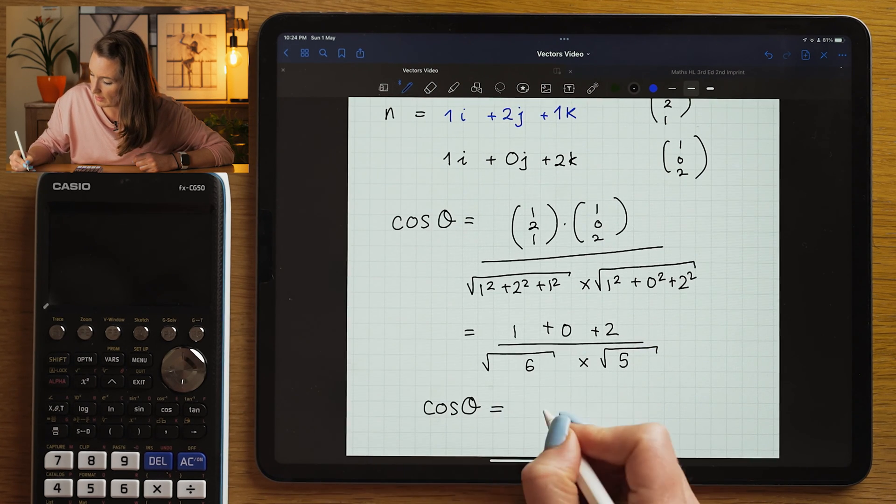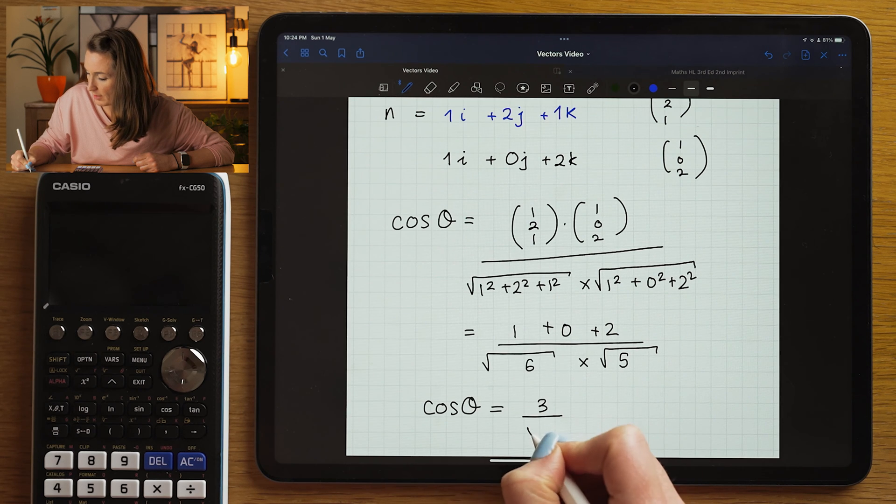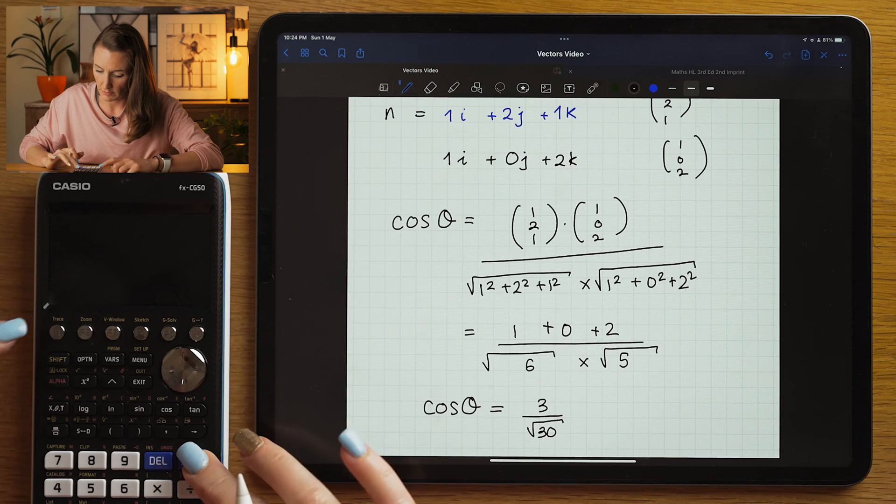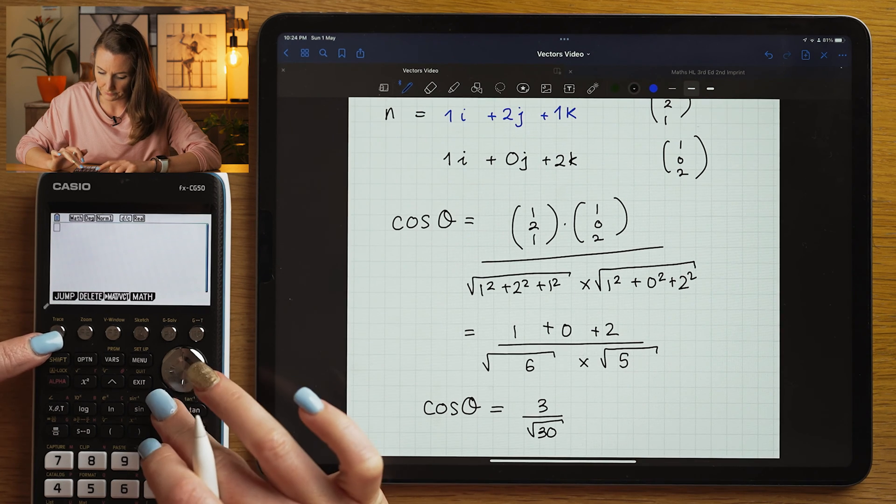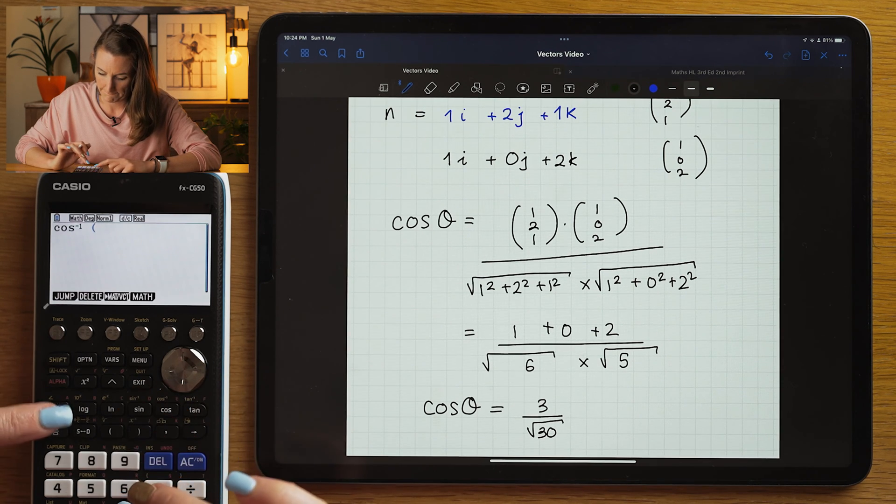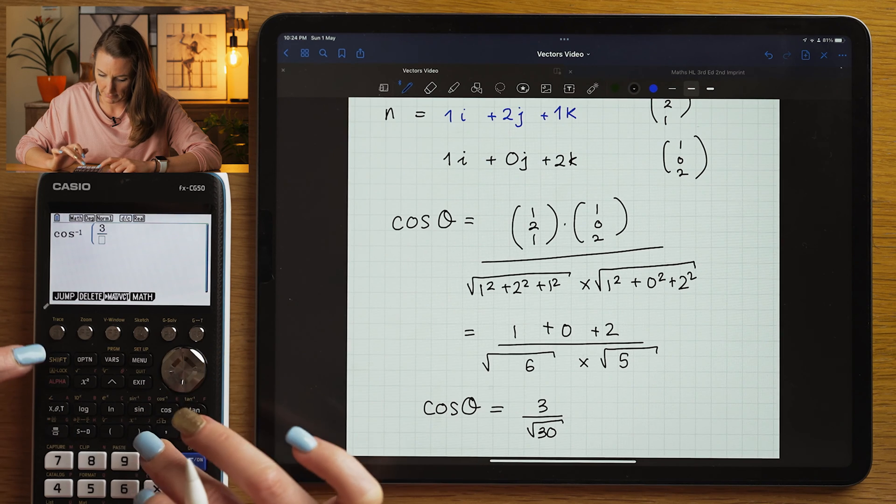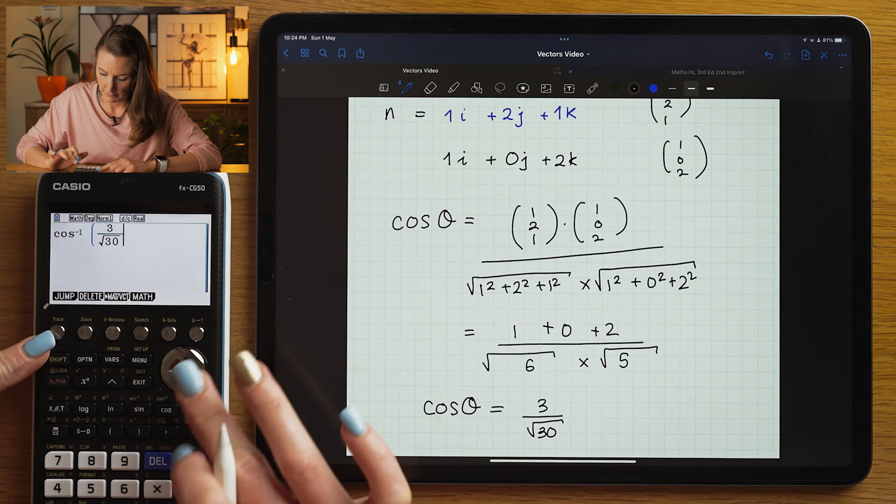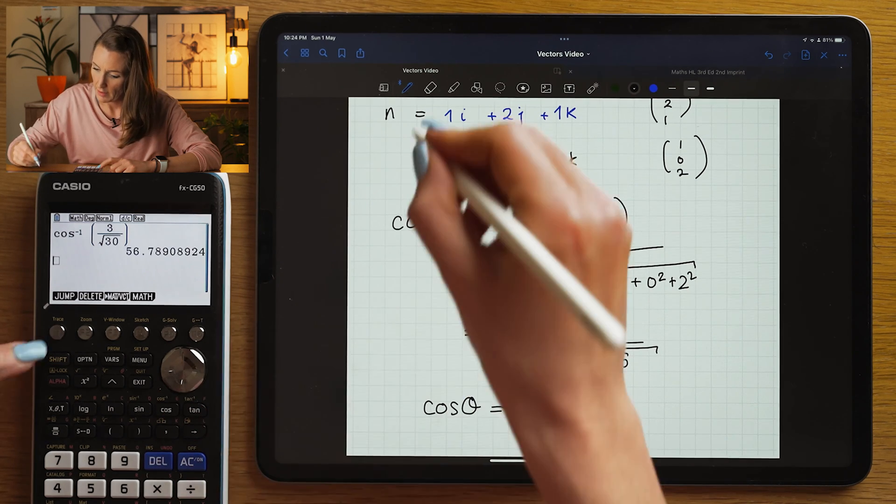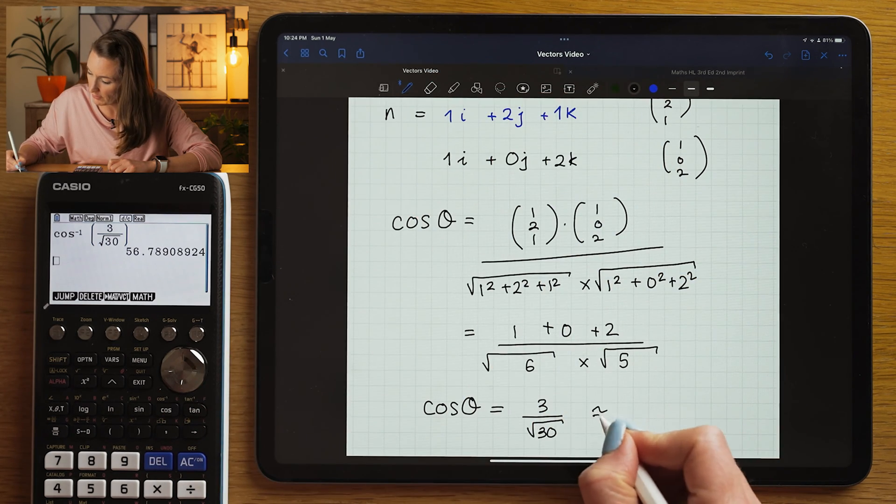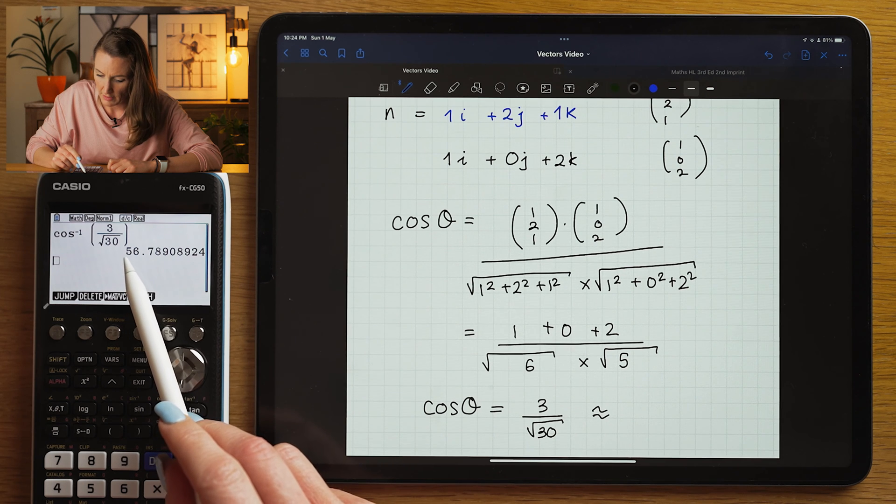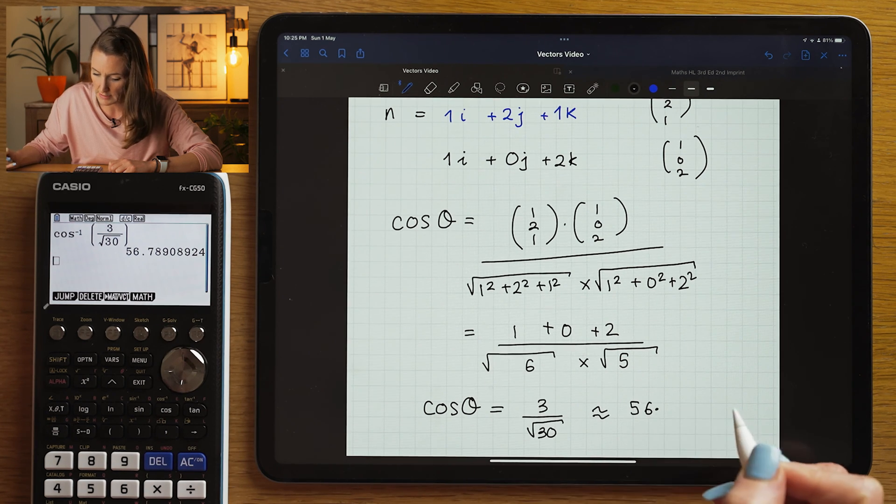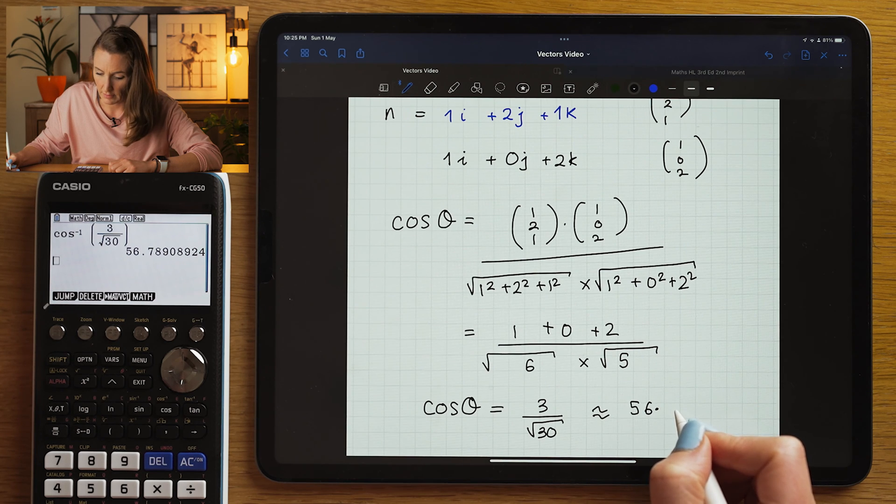So what do we have for our cos theta? We have cos theta is 3 divided by square root of 30. So use your calculator. And that tells me that roughly if I go to 3 significant figures, the angle is going to be 56.8.